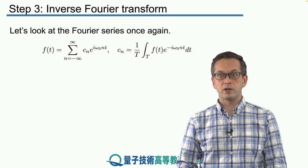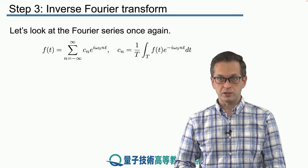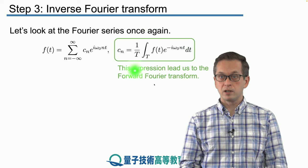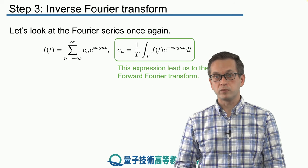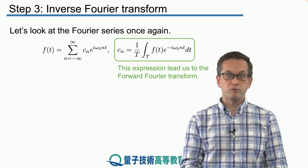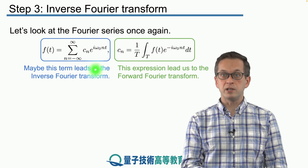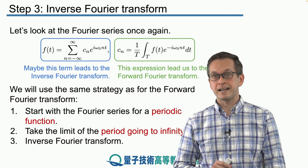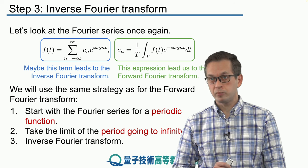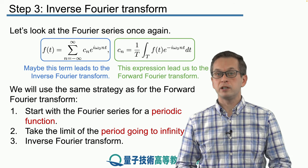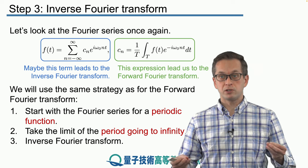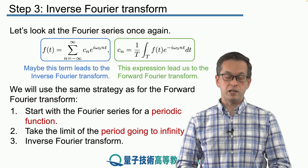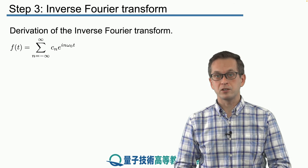Let's start with our discrete Fourier series for a periodic function. In the previous step we saw how starting from one term leads us to the forward Fourier transform, so we might expect that starting from a different term will lead us to the inverse Fourier transform. Our strategy is exactly the same: we're going to take our non-periodic function, turn it into a periodic one, stretch the period into infinity, and hopefully that will give us the inverse Fourier transform.